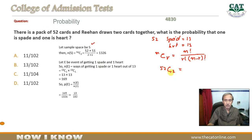52C2 kyunke hum ne do cards lene hain isliye hum ne r ki jagah pe 2 rakha hai aur n ki jagah pe 52 total cards. To yeh ho gaye 52 ka factorial over 2 factorial into 52 minus 2 factorial.